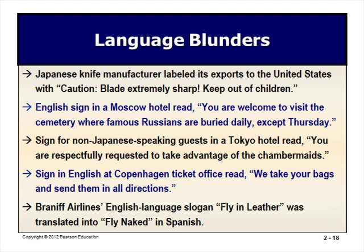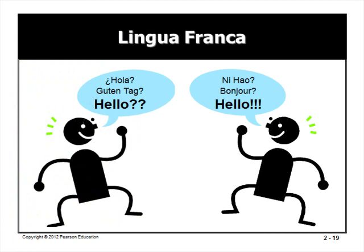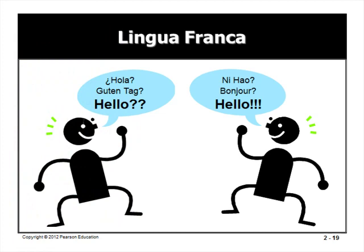Spoken and Written Language: Linguistically different segments of a population are often culturally, socially, and politically distinct. Companies have made language blunders in their international business dealings. A lingua franca is a third or bridge language understood by two parties who speak different languages. Some languages are dying out, whereas others are growing, including Mandarin, Spanish, and English.